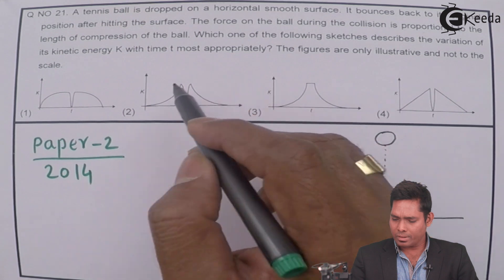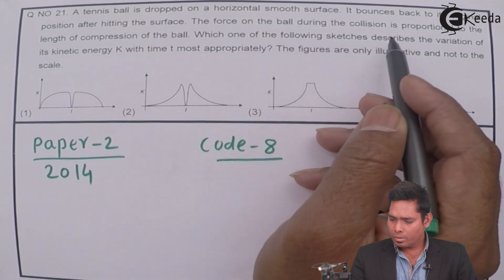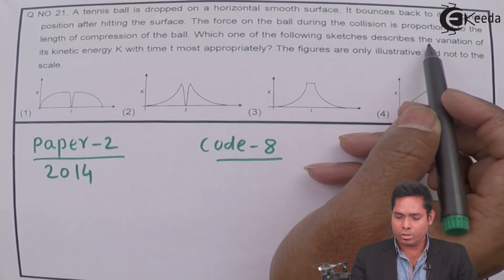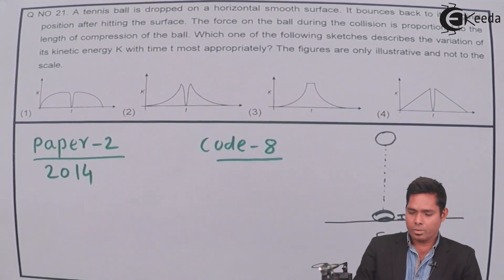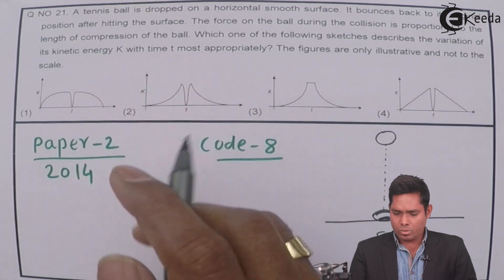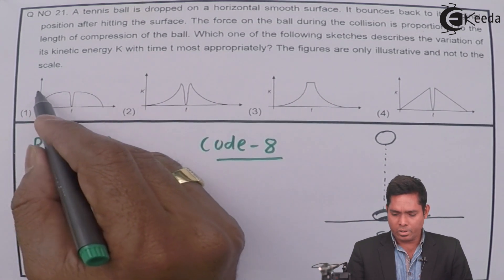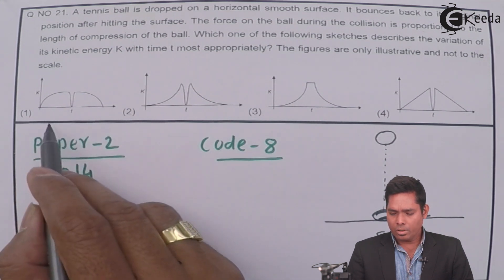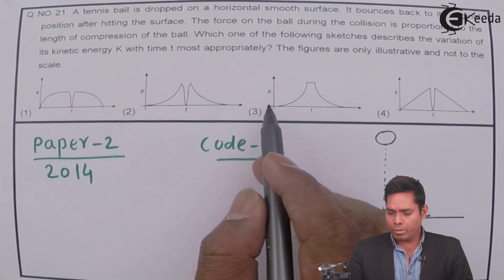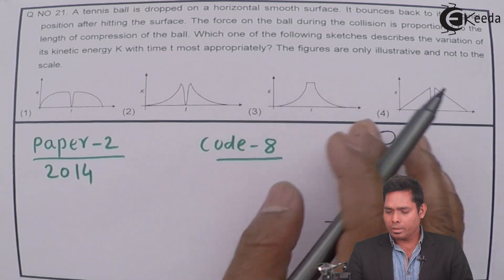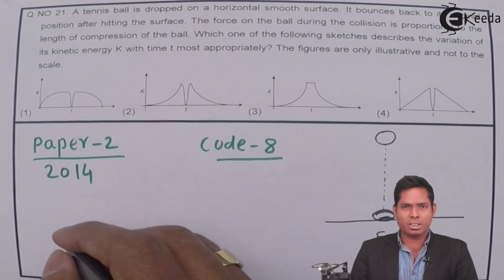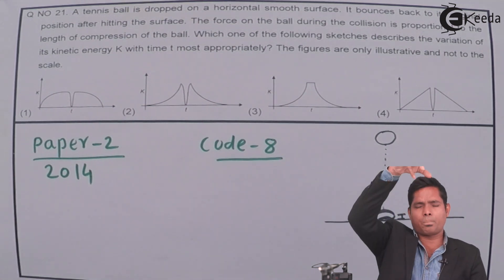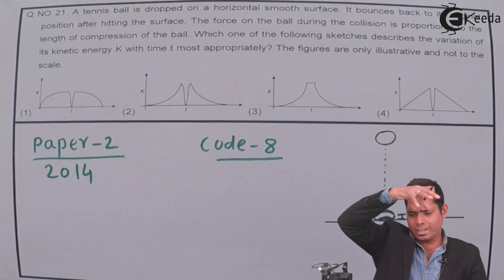The question asks us to find which curve on the graph nearly describes the actual variation of kinetic energy with time, where kinetic energy is on the y-axis and time is on the x-axis. We need to find which graph is correct when the ball hits the surface and then bounces back to the same height.